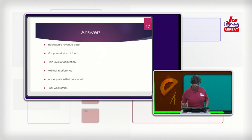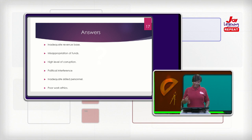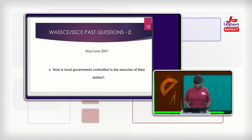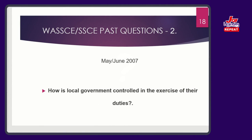If you were asked to suggest solutions as to how the central government can improve on the activities of the district assemblies, you should be able to do that by looking at the challenges we have. Now let's look at the second question: How is local government controlled in the exercise of their duties? Are they controlled? Remember, in the beginning we said that they are semi-autonomous, and also a sub-governmental body. In which ways are they controlled? What factors are responsible for their control?